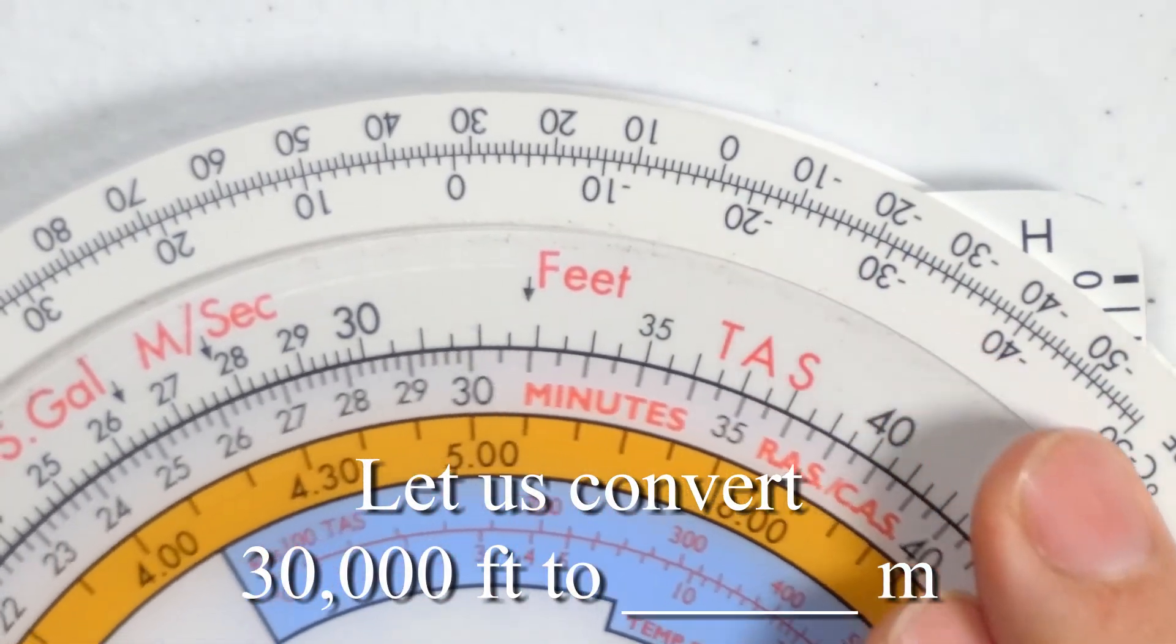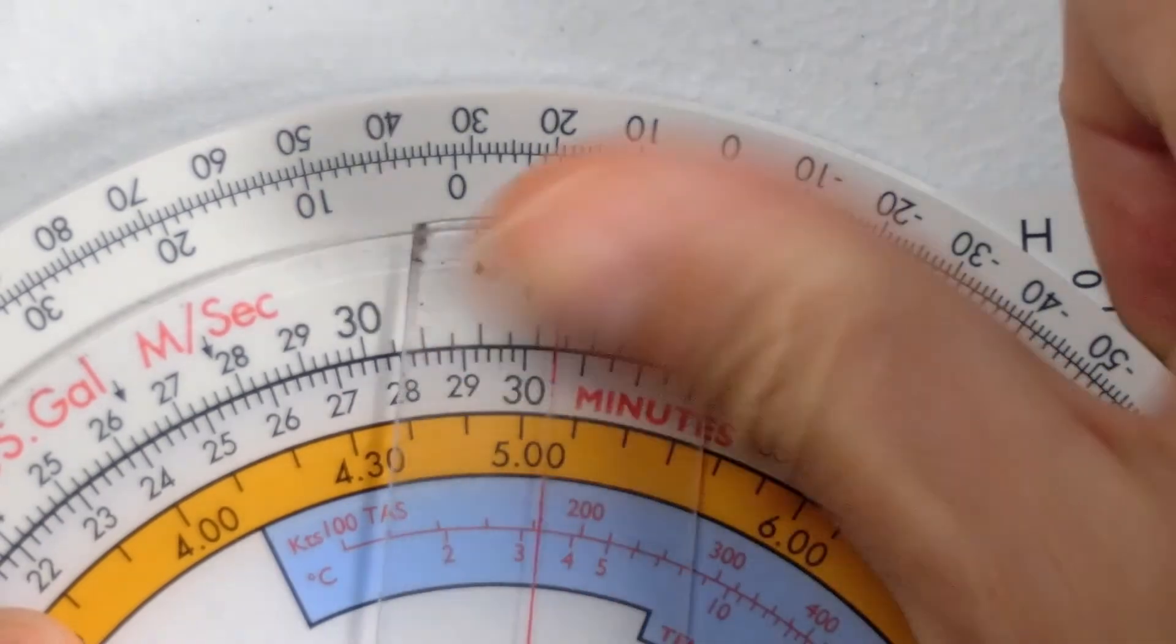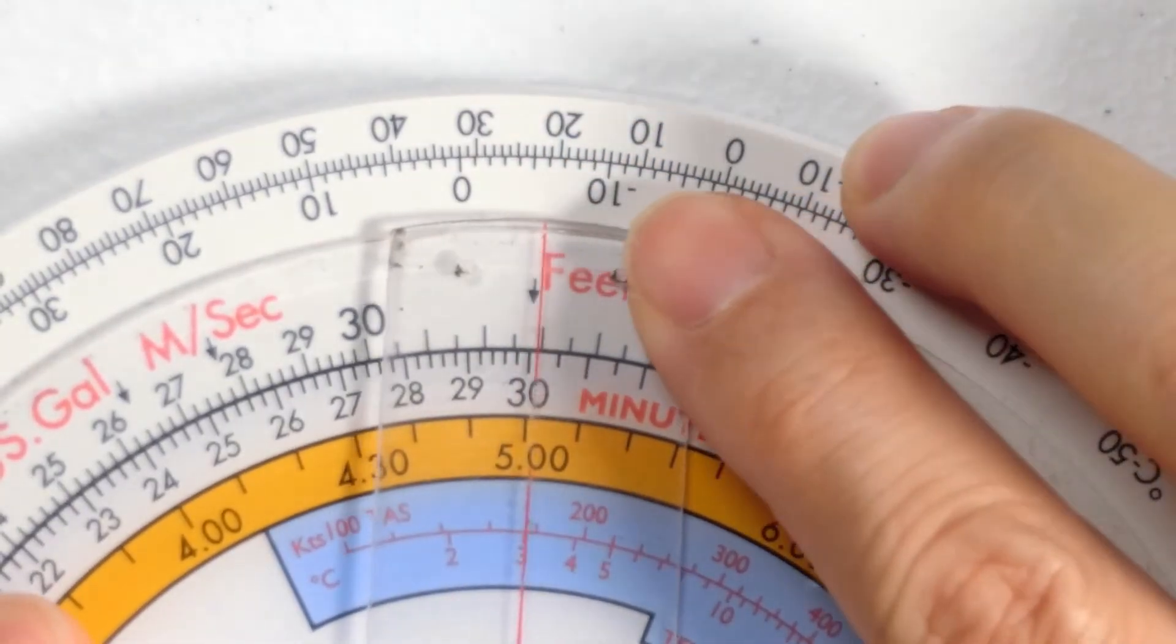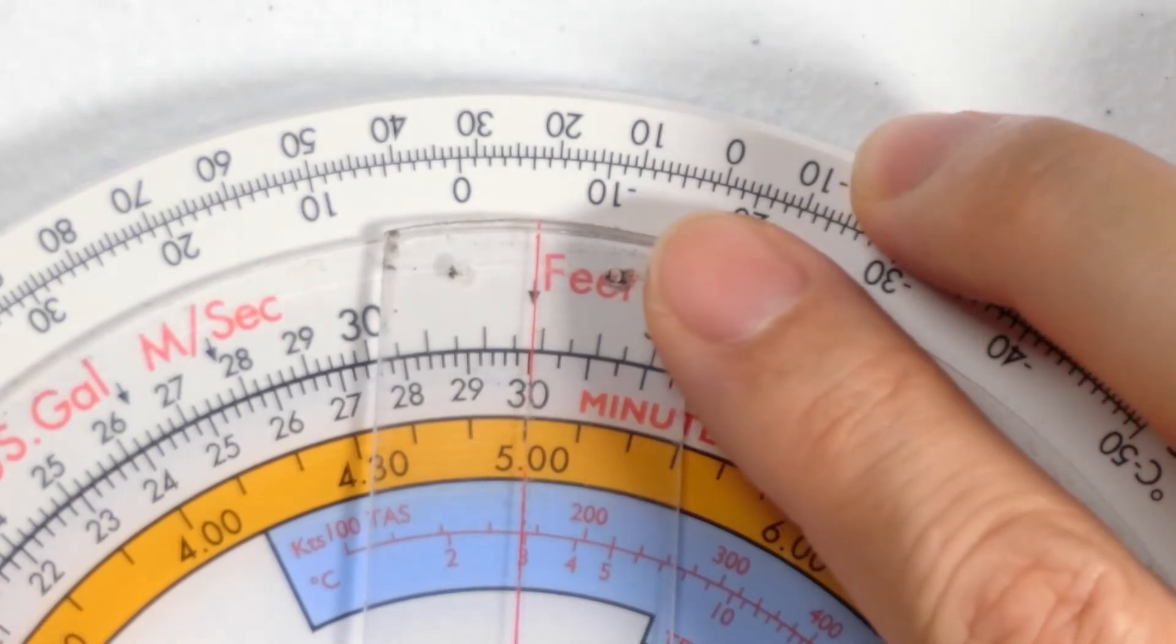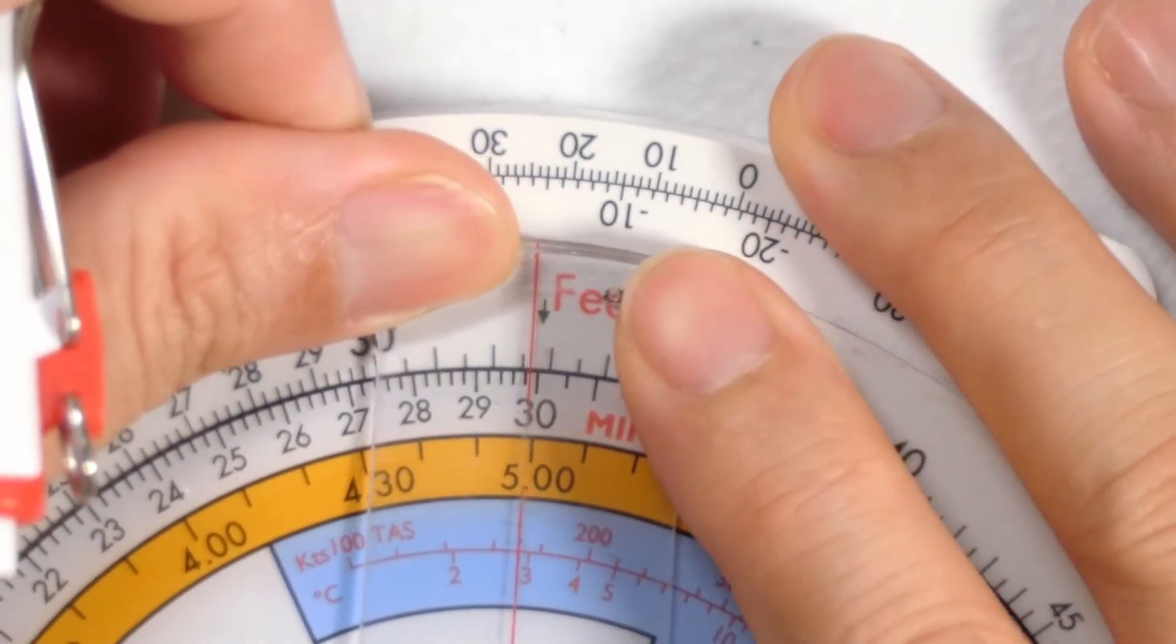So what I'm going to do is I'm going to move 30,000 to the feet pointer and I'm going to line that up with the cursor to make sure it's exact. It takes a little bit of fiddling here because I'm trying to work under a camera.